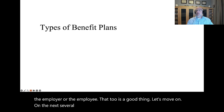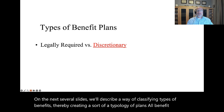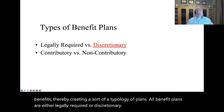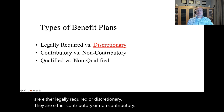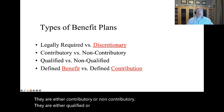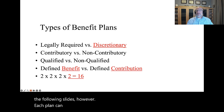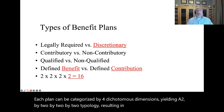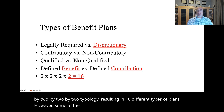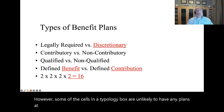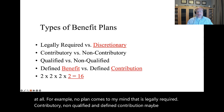On the next several slides, we'll describe a way of classifying types of benefits, thereby creating a typology of plans. All benefit plans are either legally required or discretionary; either contributory or non-contributory; either qualified or non-qualified; and either defined benefit or defined contribution. Each plan can be categorized by four dichotomous dimensions, yielding a 2x2x2x2 typology resulting in 16 different types of plans. However, some cells in the typology are unlikely to have any plans at all.